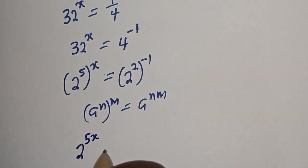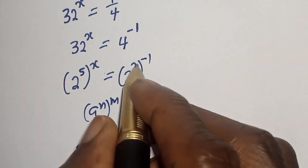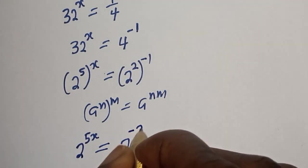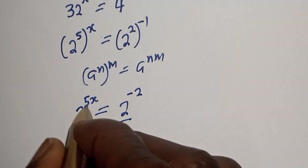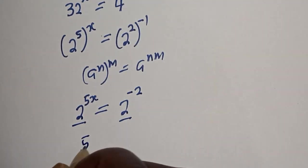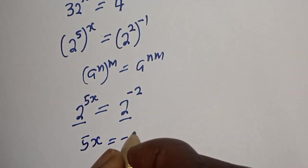5s equals 2 raised to power 2 times minus 1, which is minus 2. This has the same base 2, so we work with exponents: 5s equals minus 2.